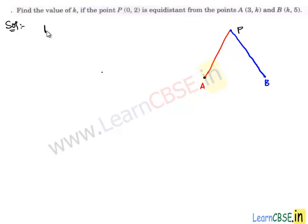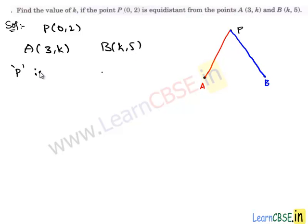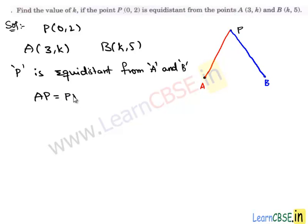Here we have point P which is (0, 2), point A is (3, k), and B is (k, 5). Since P is equidistant from A and B, the distance AP is equal to distance BP. By the distance formula, the distance between any two points is the square root of the sum of squares of the difference between x-coordinates and y-coordinates.